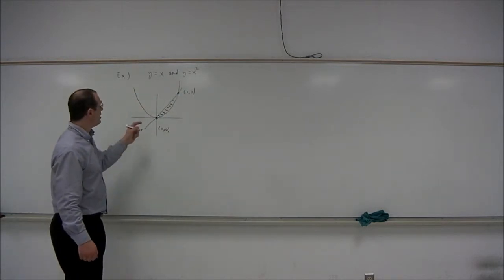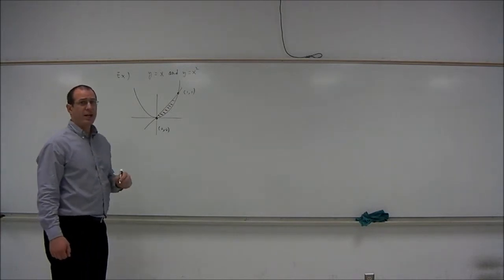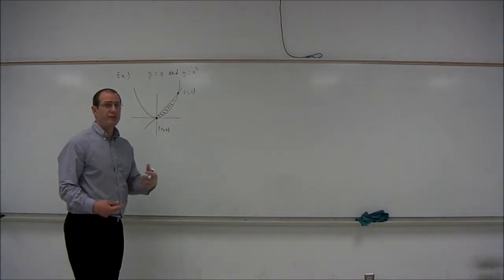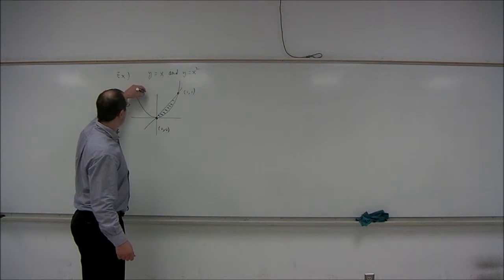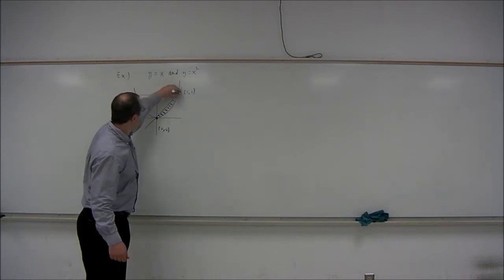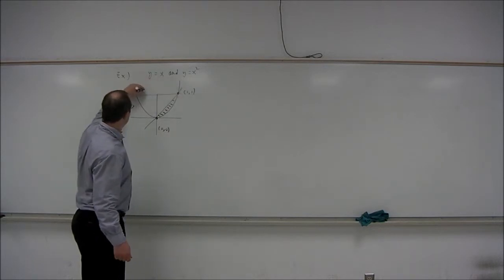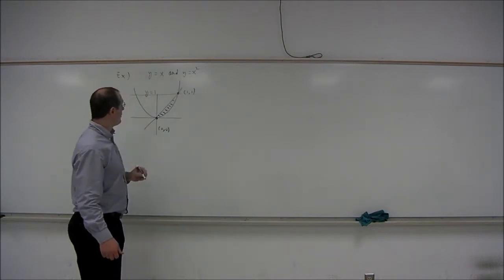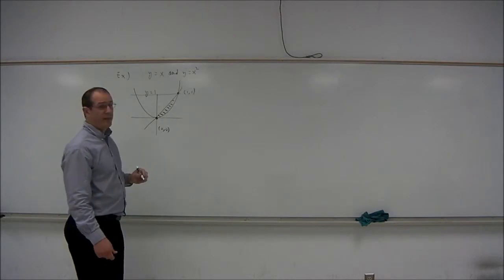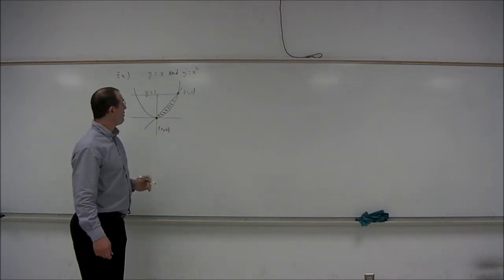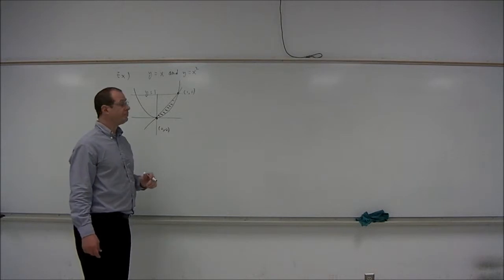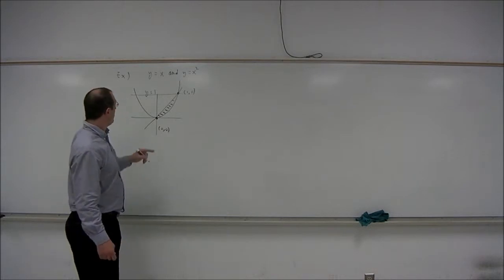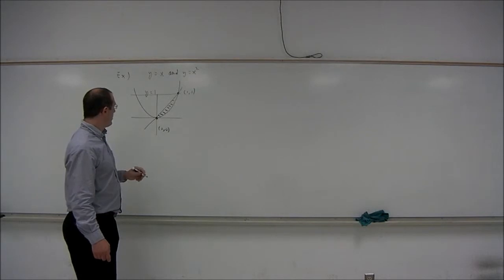Now let's take this region and revolve it about two different lines. First, we'll revolve it about the line y equals 1. And then we'll revolve it about the vertical line x equals 1. So first, revolving the region around the line y equals 1.